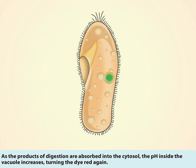As the products of digestion are absorbed into the cytosol, the pH inside the vacuole increases, turning the dye red again.